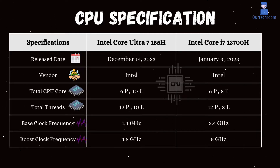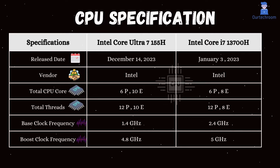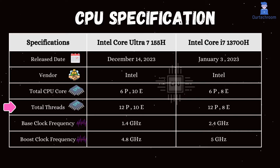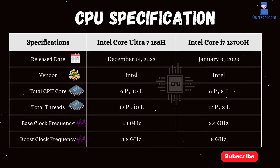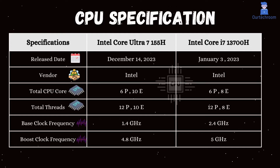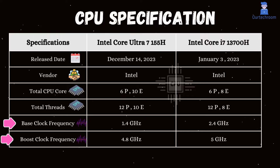The Core Ultra 7 155H has 6 performance cores and 10 efficiency cores, while the Core i7-13700H has 6 performance cores and 8 efficiency cores. Additionally, the Core Ultra 7 155H provides 12 performance threads and 10 efficiency threads, compared to the Core i7-13700H, which has 12 performance threads and 8 efficiency threads.